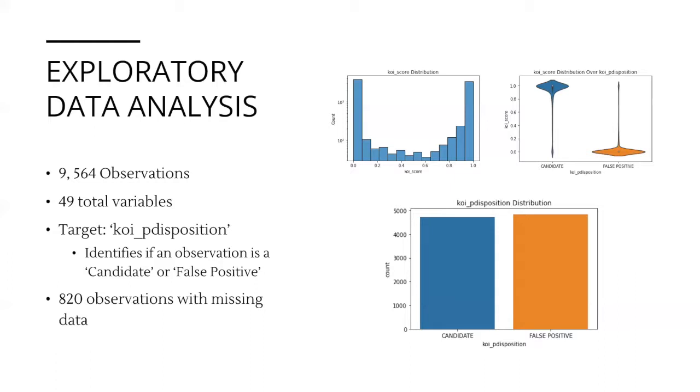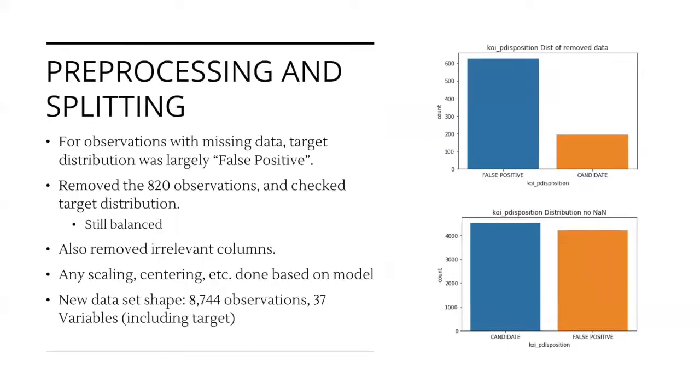We also checked for and found 820 observations with missing values. Considering our options to deal with missing data, we first wanted to remove the columns that were completely devoid of all input data. These variables would obviously not provide any value. We then want to know how many observations include missing data. There are 820 of the entire data set, or about 8.5%. Looking at the labels associated with the observations with missing data, we found they heavily favored false positive results. We took this to suggest the missing values were more likely to result in false positives and that they were biasing the data.